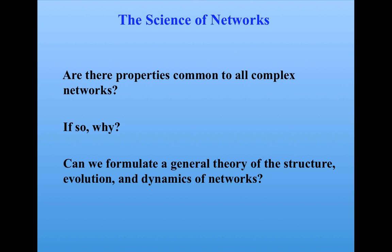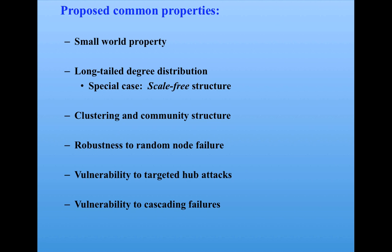To give you a preview, here is a short list of some of the proposed common properties that we'll be looking at: the so-called small world property, the idea of long-tailed degree distributions, which has a special case of scale-free structure. We'll look at clustering and community structure in networks. We'll also see how certain kinds of structure allow networks to be robust in certain ways, but vulnerable in other ways.